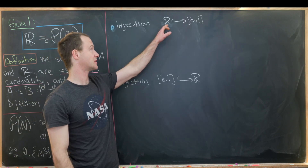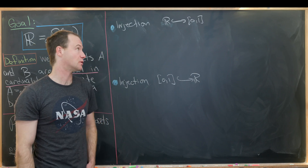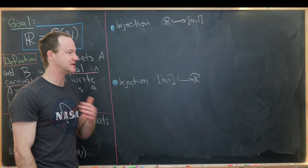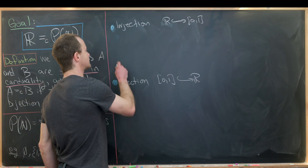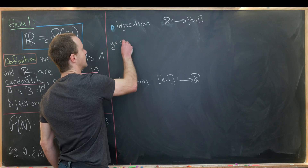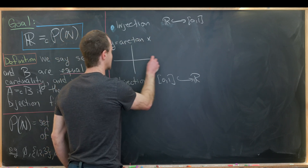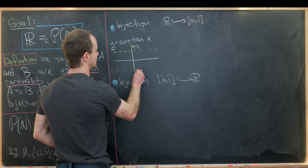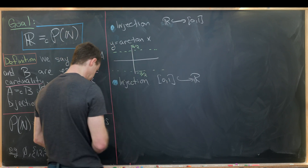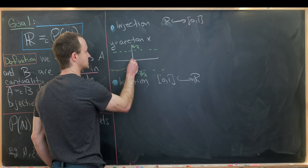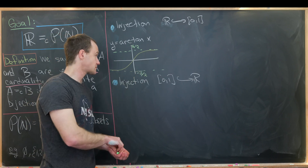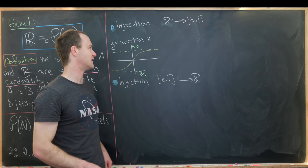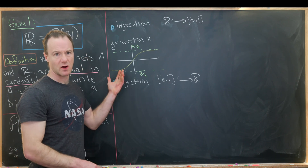Let's first exhibit an injection from the real numbers to the closed interval [0,1]. The way I like to do it involves the inverse tangent function. Recall that the graph of y = arctan(x) has horizontal asymptotes at π/2 and −π/2, and the graph is most definitely one-to-one, just by the definition of this arctan function.